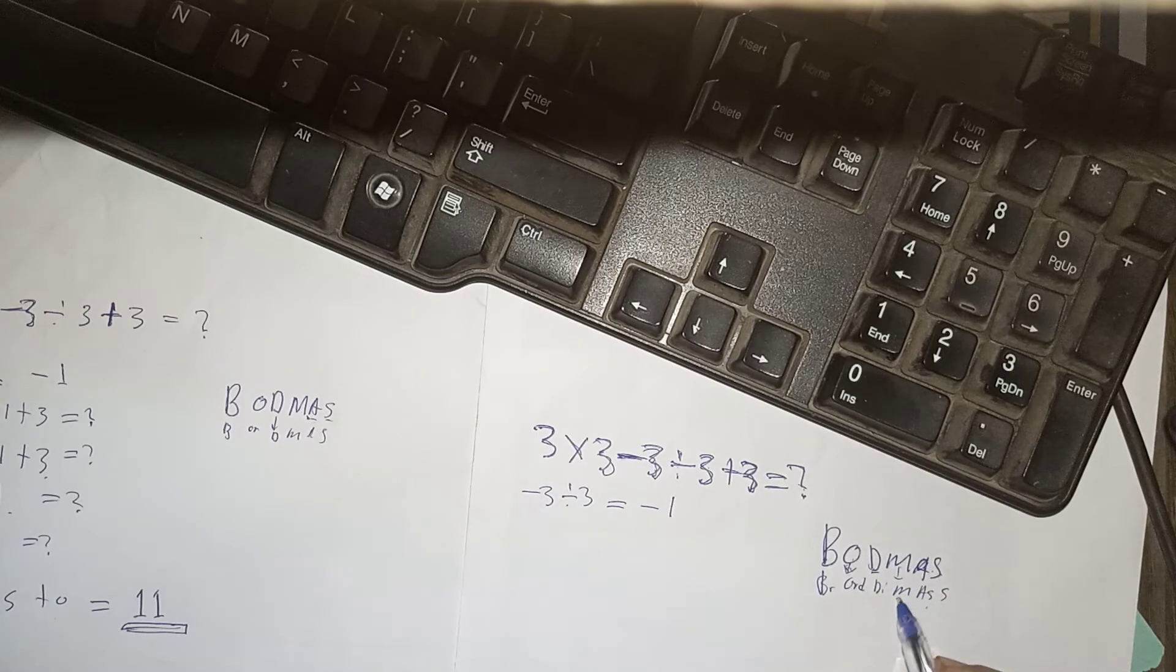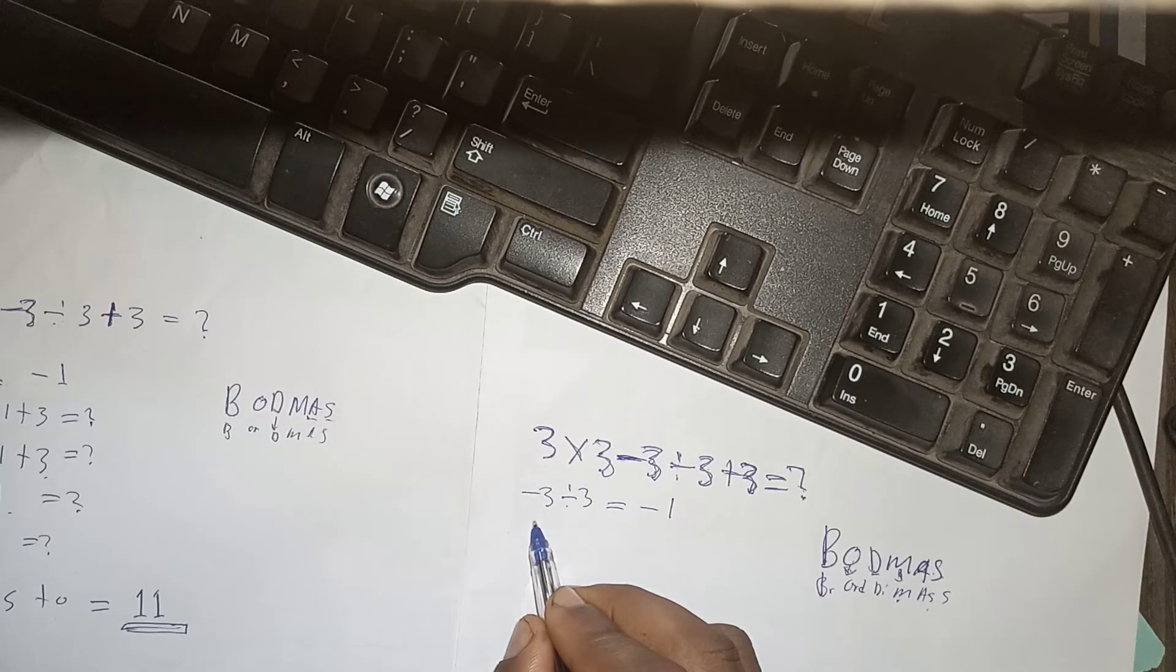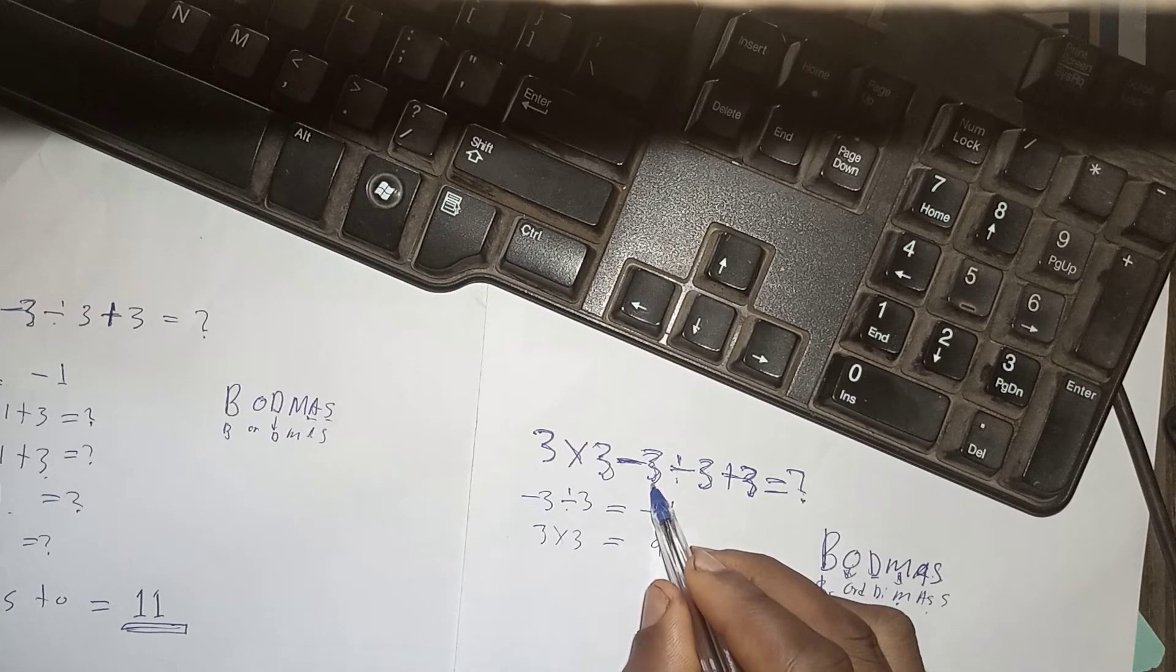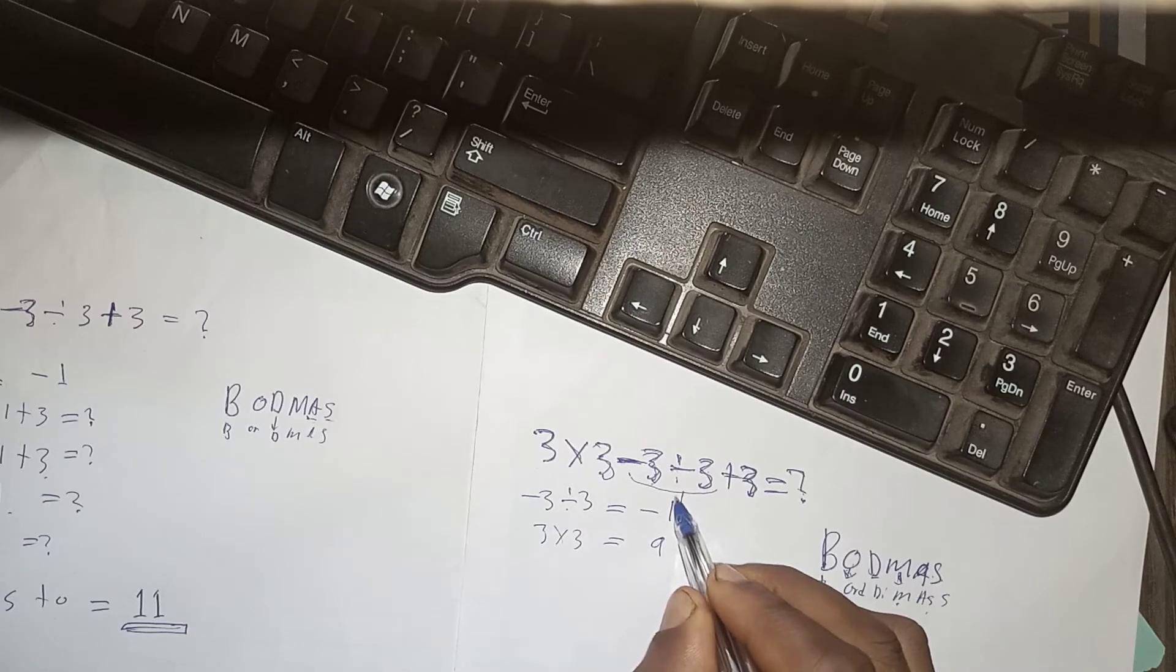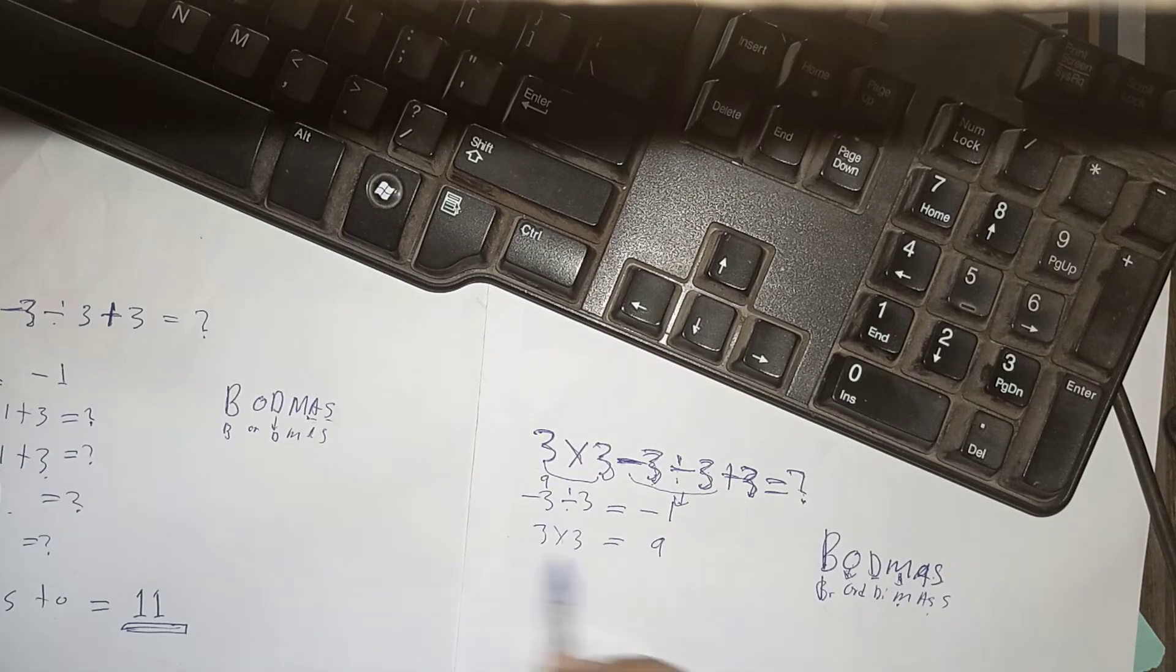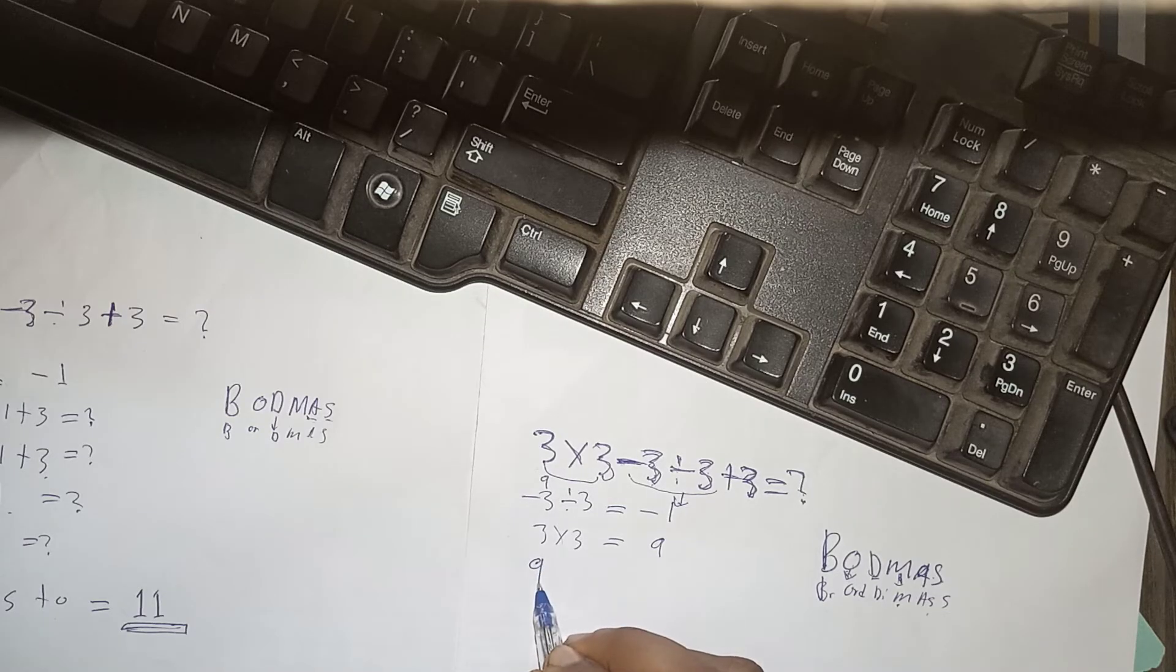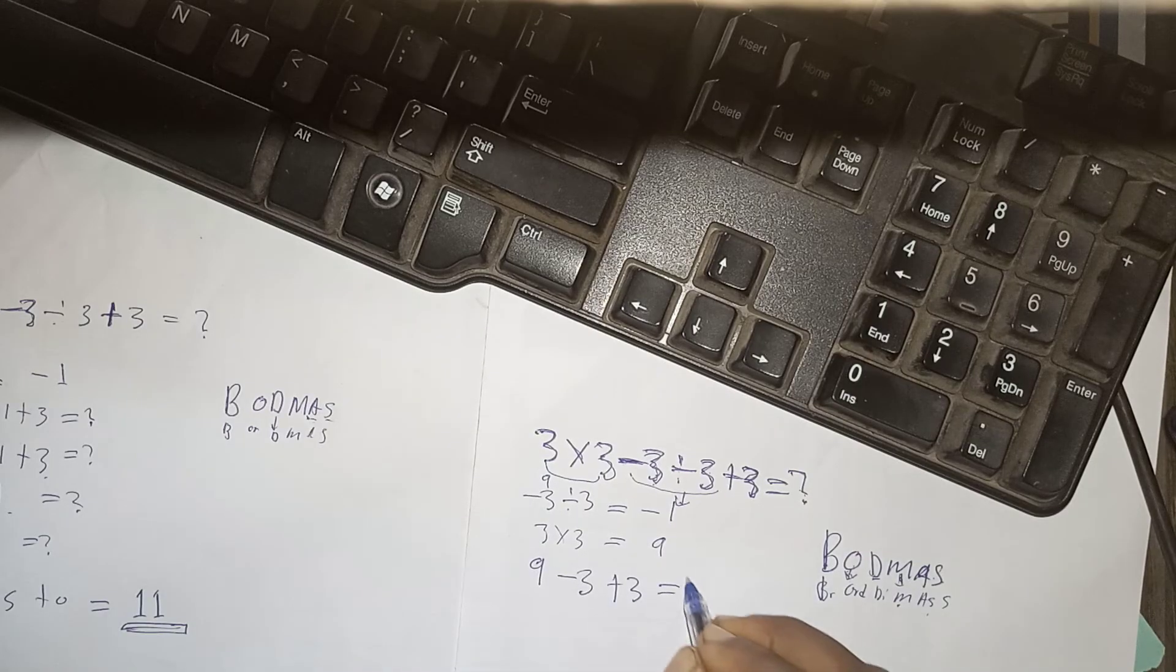We go now to multiplication. If we want to multiply, we will have 3 times 3, which is equal to 9. And so, this expression here is negative 1, and this one here is 9. Let's rearrange it. We have now 9 minus 3 plus 3 is equals.